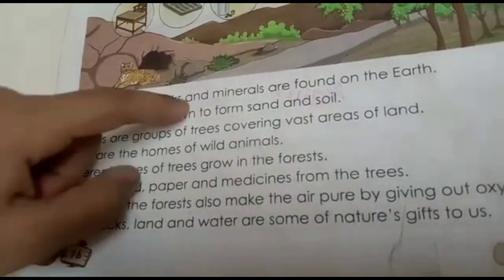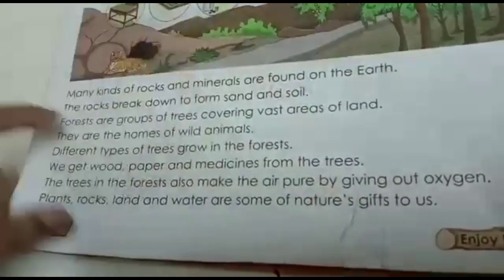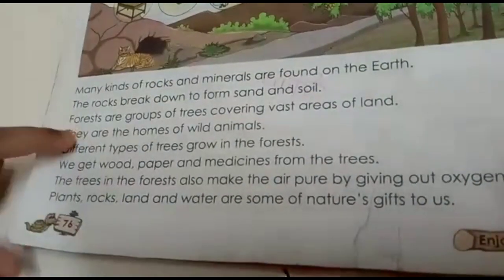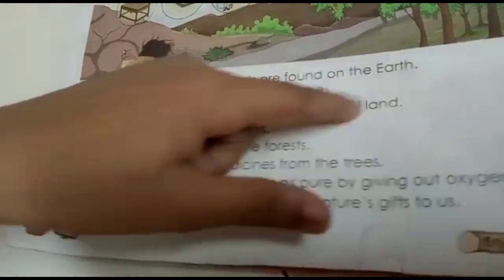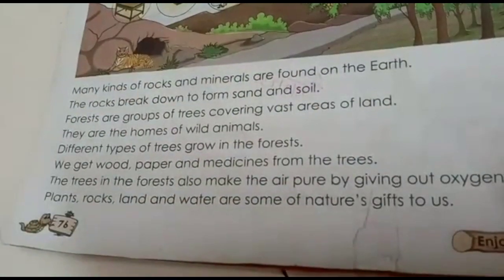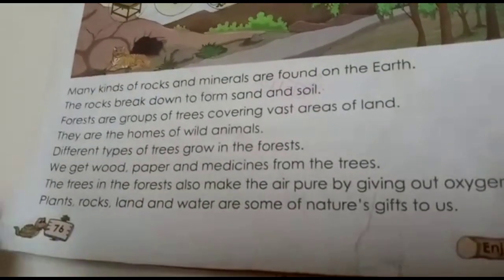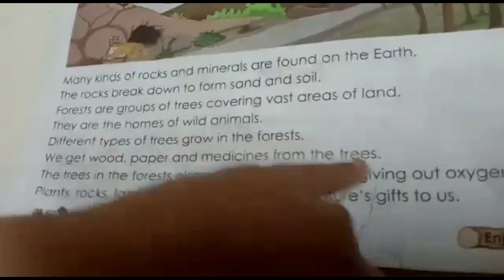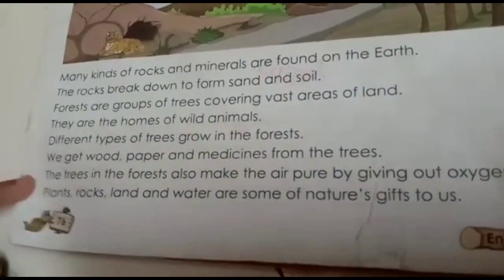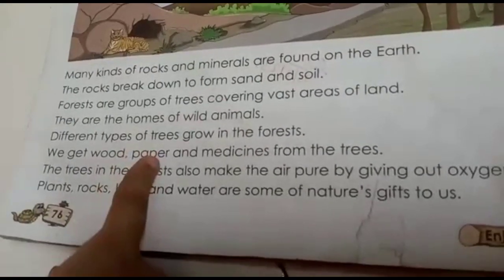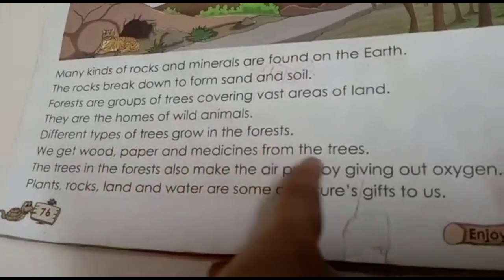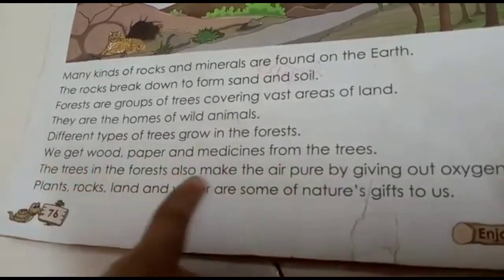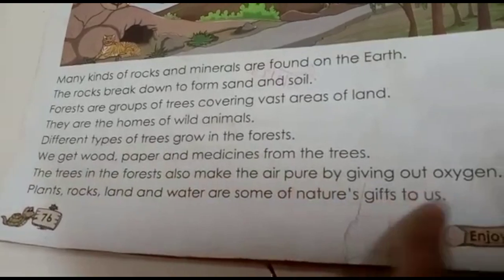We get sea food from the oceans and seas. We also use these water bodies for transportation. Many kinds of rocks and minerals are found on the earth. The rocks break down to form sand and soil. Forests are groups of trees covering vast areas of land. They are the home of wild animals. Different types of trees grow in the forest. We get wood, paper and medicines from the trees. The trees in the forest also make the air pure by giving out oxygen.